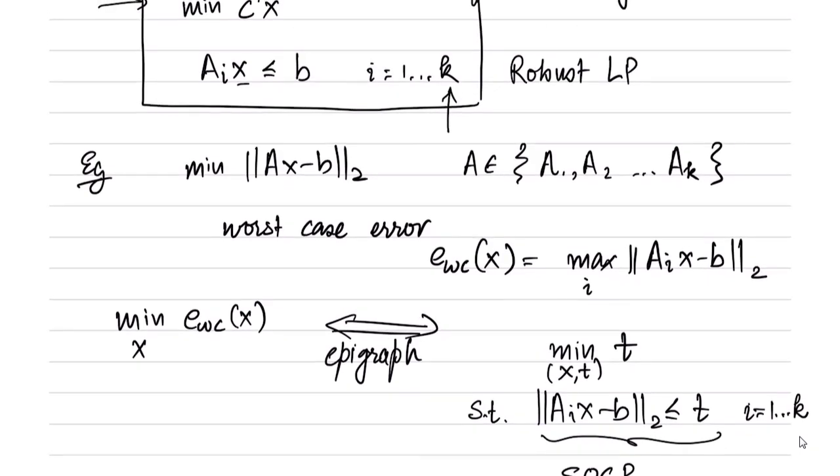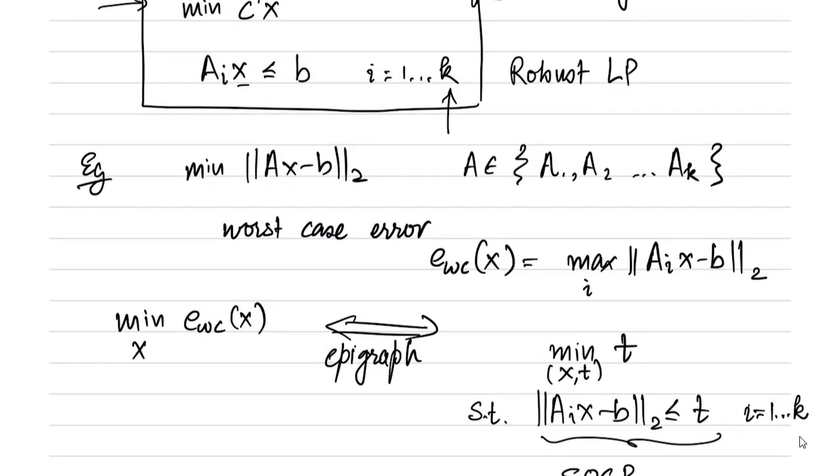We have seen two simple examples of robust linear programming and robust least squares. So far we have only considered simple examples where the number of possibilities for A matrix were given as a fixed and finite number. But that may not always be the case. There are more general ways in which you can characterize the uncertainty in a problem. In this example the uncertainty is characterized as discrete possibilities for A matrix, but there are more general ways in which that uncertainty in the problem parameters can be characterized.